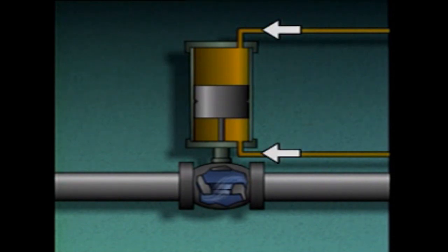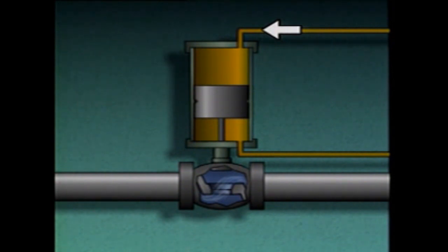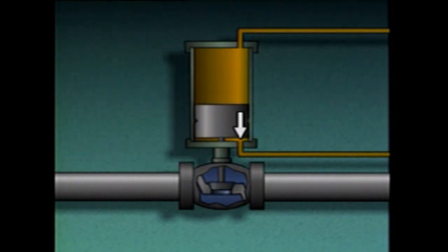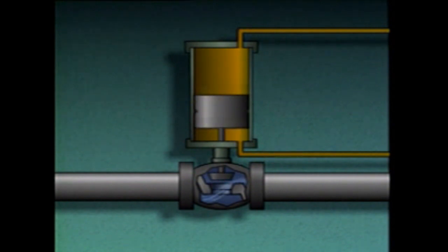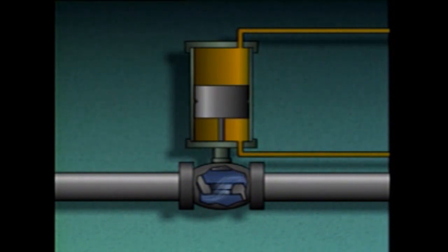Fluid can enter the cylinder through either of the two ports to move the piston up or down. In this example, if fluid enters through the top port, it pushes the piston and piston rod down to close the valve, and an equal volume of fluid is bled through the lower port. When fluid flow is directed into the lower port, it causes the piston and piston rod to move up, opening the valve. At the same time, an equal volume of fluid flows out of the upper port of the cylinder.